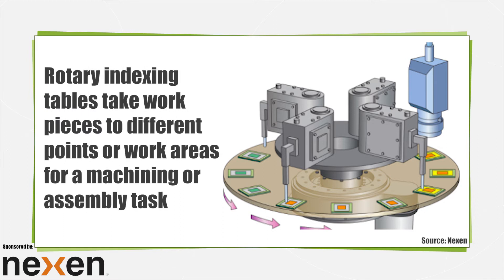Tables for rotary indexing are a special design for repetitive moves around the platform. Assembly, machining, and bottling machines all use indexers. Usually they take one piece around to work areas or move arrays of relatively small parts around stations for sequential machining or assembly tasks.